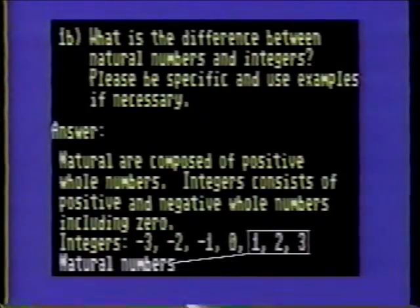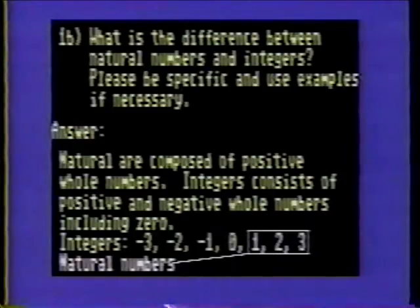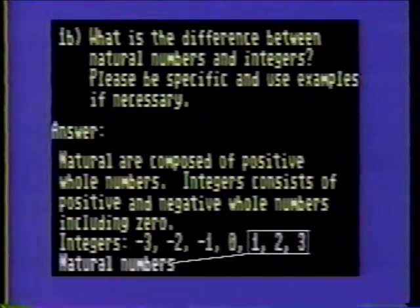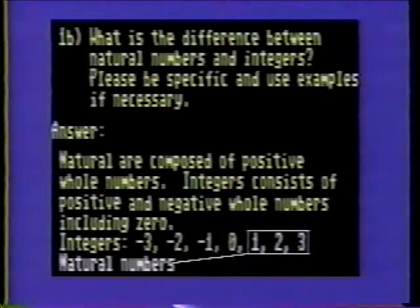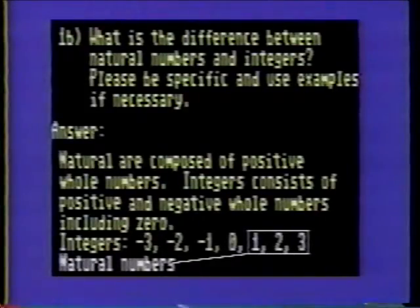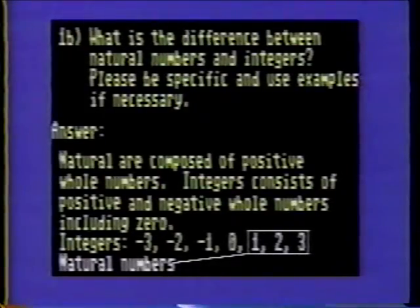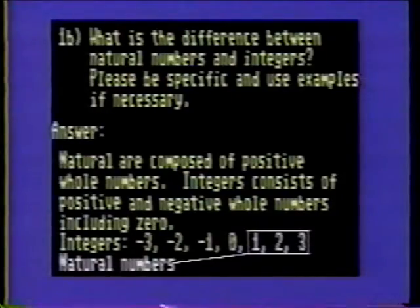Integers are: negative three, negative two, negative one, zero, one, two, three. From our examples above, the natural numbers are one, two, three.